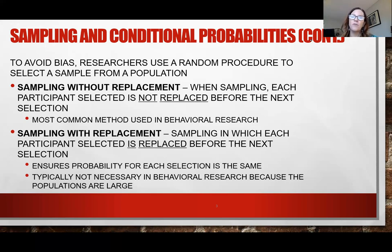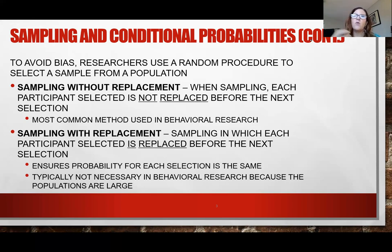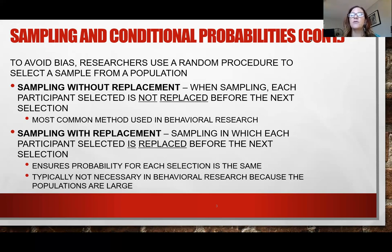Sampling with replacement is where we put John back in the hat. This is not for actual research — it's for building a theoretical distribution. No matter how many samples I pull, there's still a 1 in 30 chance, because I keep putting that person back over and over. This builds that theoretical distribution for us to compare our sample means to.